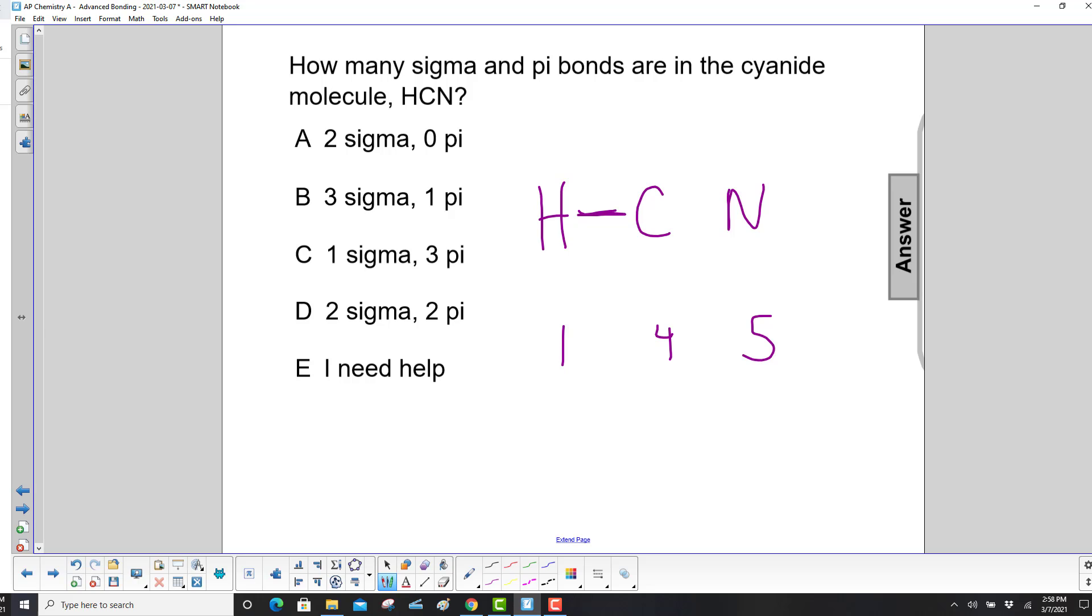Now carbon needs three more bonds. So 1, 2, 3. And then nitrogen has 5. So there's three electrons, and it has two more over here. So here's our Lewis structure.